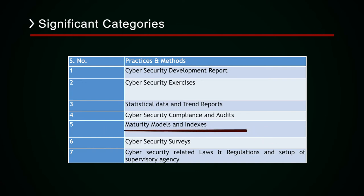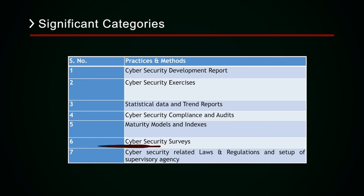A few countries implemented maturity models and indexes — standards frameworks used to measure the maturity and scale of a country's cybersecurity initiatives. Some nations have conducted cybersecurity surveys collecting data from citizens, businesses, and critical sectors to understand the cybersecurity posture of the country. In some cases, cybersecurity-related laws and regulations and the setup of supervisory agencies are implemented to ensure better preparedness in the domain of cybersecurity. These were the significant categories that countries across the globe are implementing to improve their cybersecurity posture.